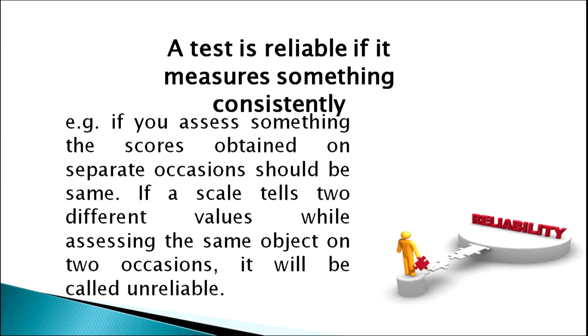First, let us know what is reliability of the test. A test is reliable if it measures something consistently. For example, if you assess something, the scores obtained on separate occasions — say six months apart — should be the same. If a scale tells two different values while assessing the same object on two occasions, it is called an unreliable test. If your intelligence scores today show a different value and after six months show a different value, the test is unreliable.